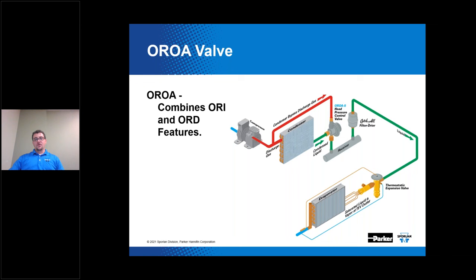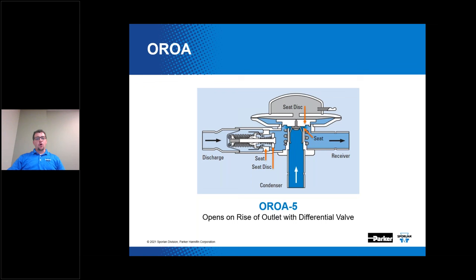Installation requires three connections — one less than the separate ORI and ORD. This valve is non-adjustable, available with one of three standard pressure settings: 100, 180, and 210 PSIG, with other pressure settings available if needed. It also has an ORD built into its mechanism on the compressor discharge side of the valve.